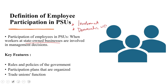Workers' participation in management can take different forms and structures depending on organizational culture, the industry, the legal framework, or the goals. Common forms include joint committees, work councils, quality circles related to TQM and TPM, and even direct involvement in strategic planning.